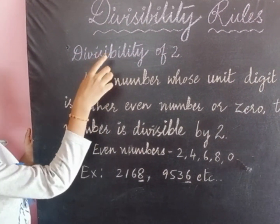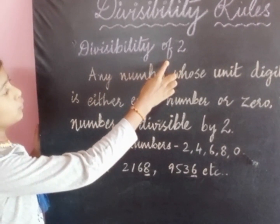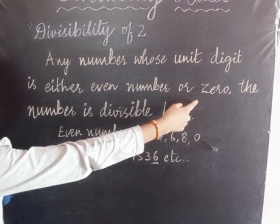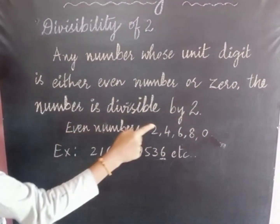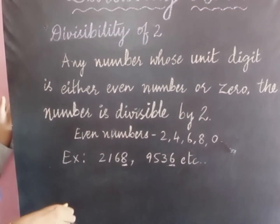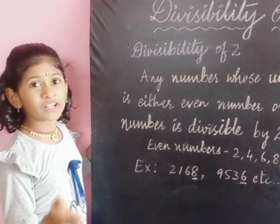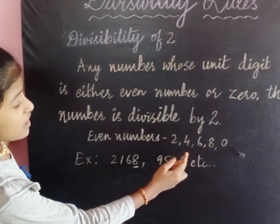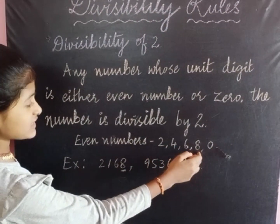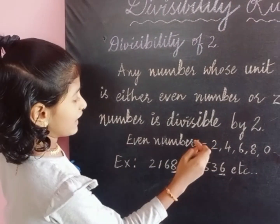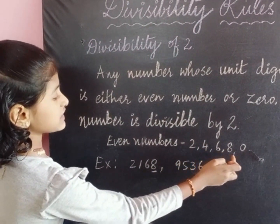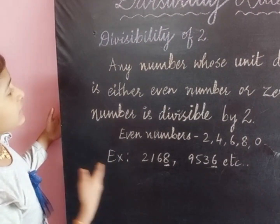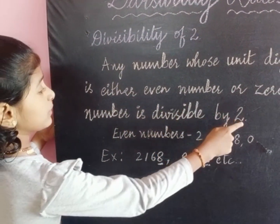Let us first start with divisibility of 2. Any number whose unit digit is either an even number or 0, the number is divisible by 2. Means any number whose unit digit is an even digit — 2, 4, 6, 8, and 0. If any number has 2, 4, 6, 8, or 0 in its unit place, it is divisible by 2.